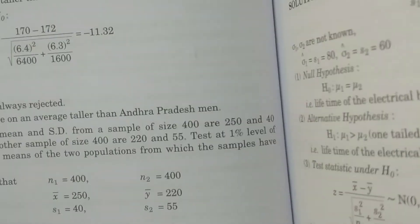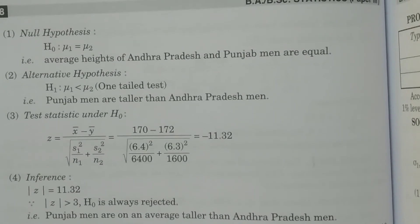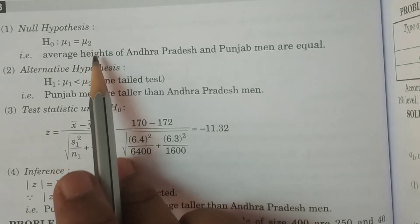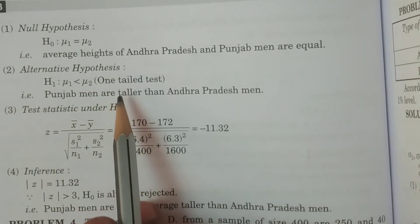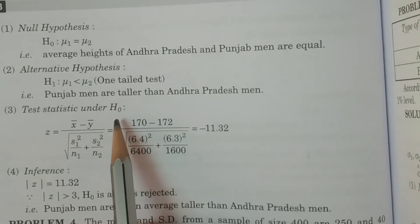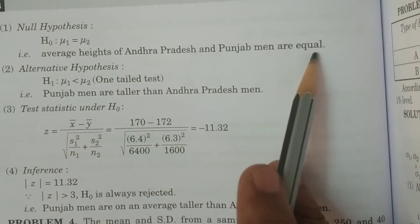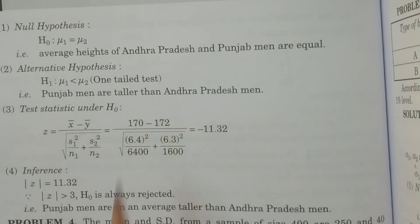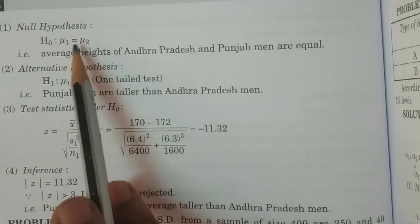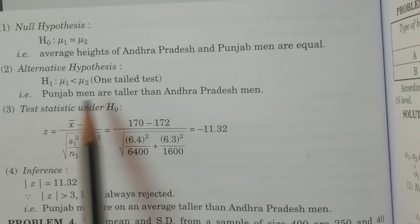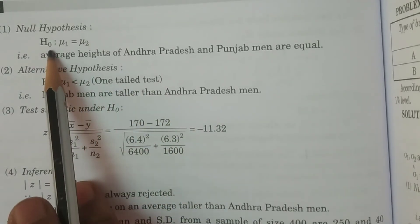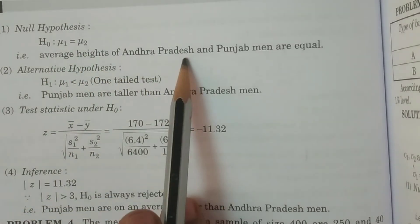Now we write the null and alternative hypotheses. The null hypothesis H0: μ1 = μ2 — that is, the average heights of Andhra Pradesh men and Punjab men are equal. This is a two-sample mean test because the means are given, so we conduct the test procedure based on the means.